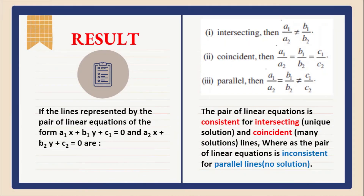So our final result: in this activity, we have learned that for a pair of linear equations a1x plus b1y plus c1 equal to 0, if the lines are intersecting then a1/a2 is not equal to b1/b2. If coincident, then the ratios of the coefficients are equal. If parallel, then a1/a2 equals b1/b2 but is not equal to c1/c2. The pair of linear equations is consistent for intersecting and coincident lines, and inconsistent for parallel lines because it has no solution. Thank you everyone for watching this video. Keep learning!